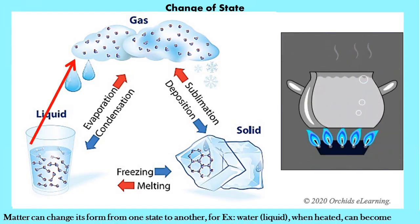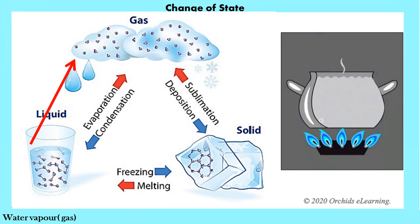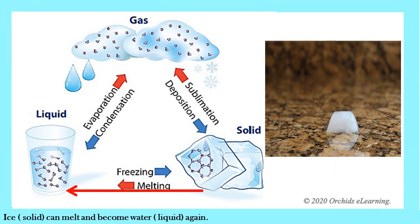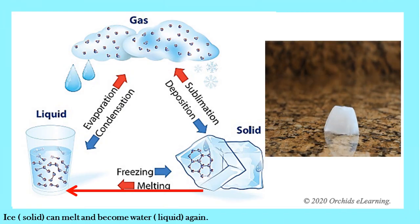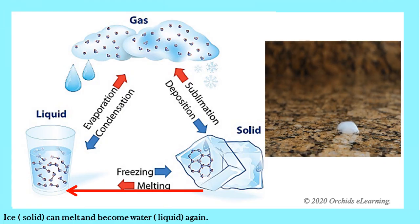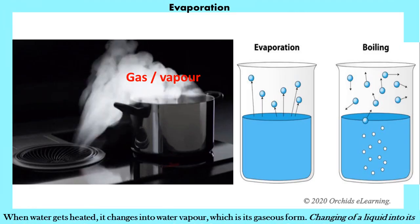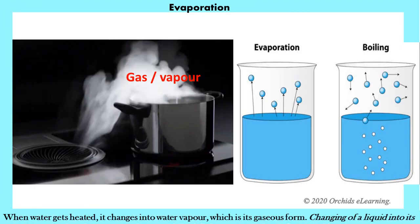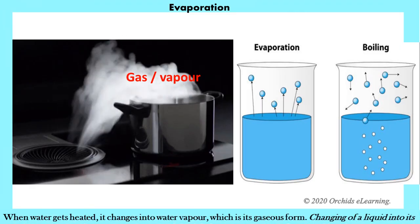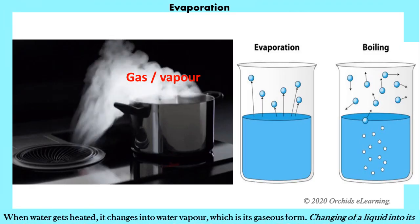Matter can change its form from one state to another. For example, water (a liquid) when heated can become water vapor (a gas), and ice (a solid) can melt and become water (a liquid) again. Let us understand these changes in terms of the movements of these tiny particles. Evaporation: when water gets heated, it changes into water vapor, which is its gaseous form.